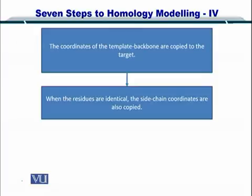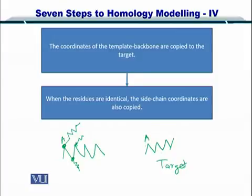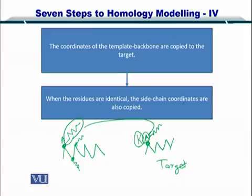Please note that when the residues are the same — that is, when the template sequence and the target sequence have, let's say, alanine at the same position — then you can also copy the side chain. For example, if the template had alanine with its own side chain, and the target also has alanine at that position, then you can copy the side chain coordinates as well. However, if there was lysine instead of alanine, the side chain would be different, so you would not copy it. Please remember: if the amino acid is the same at that position between target and template, you also copy the side chain.